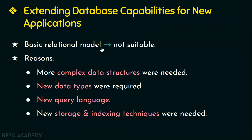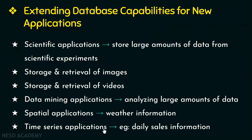Since the basic relational system was not suitable, DBMS developers added functionalities to their systems — such as incorporating concepts from object-oriented databases into the relational system, or offering optional modules. For example, users could buy a time series module to use with their relational databases for time series applications, since the basic relational system is not very suitable for many of these applications.